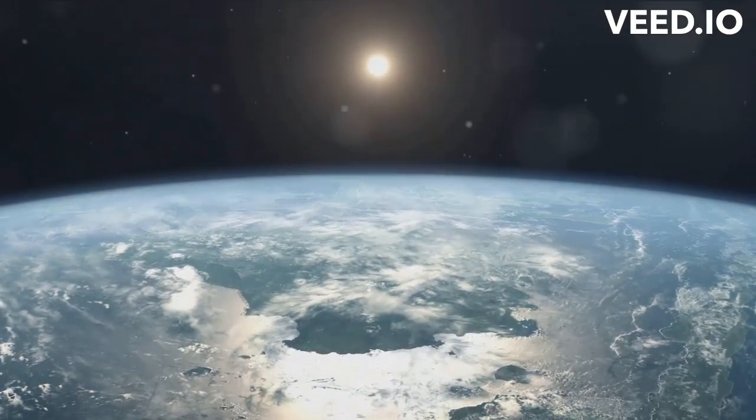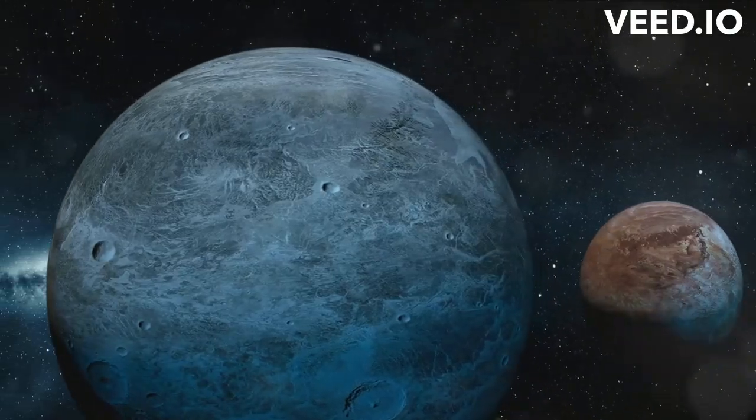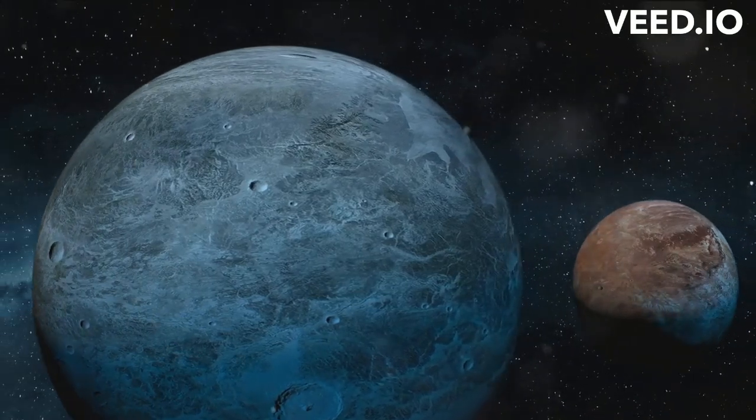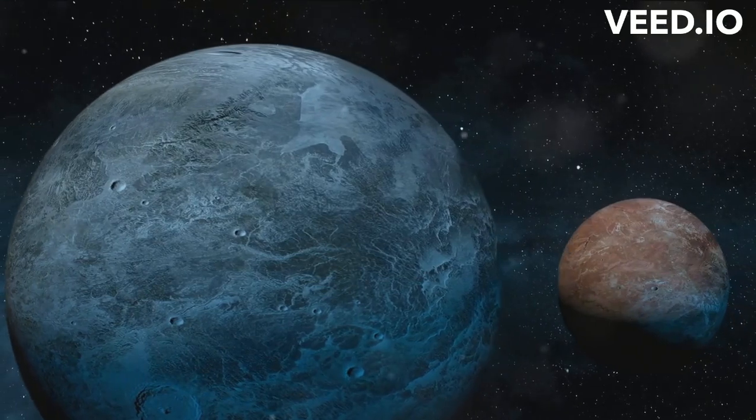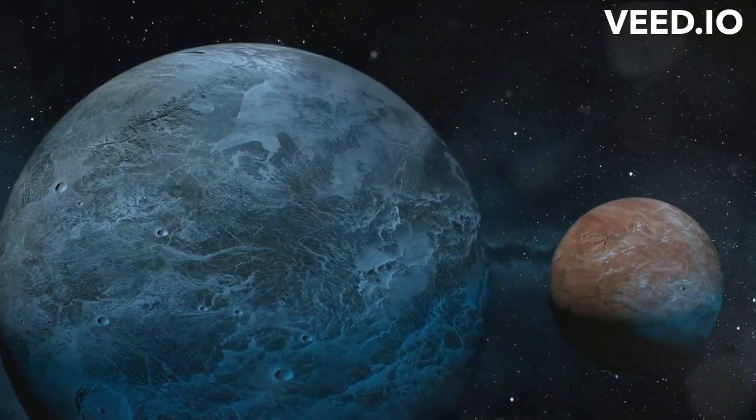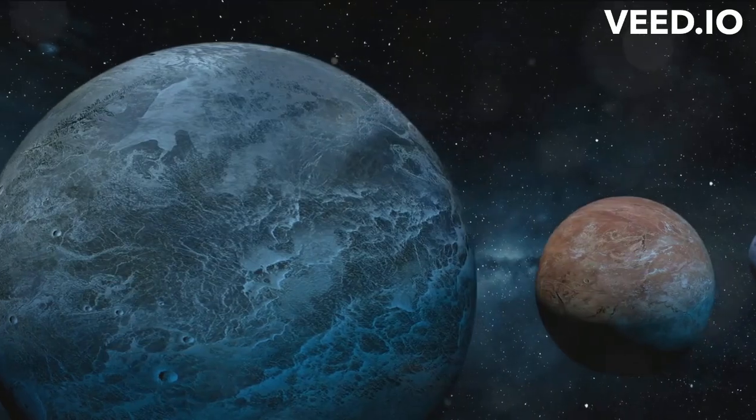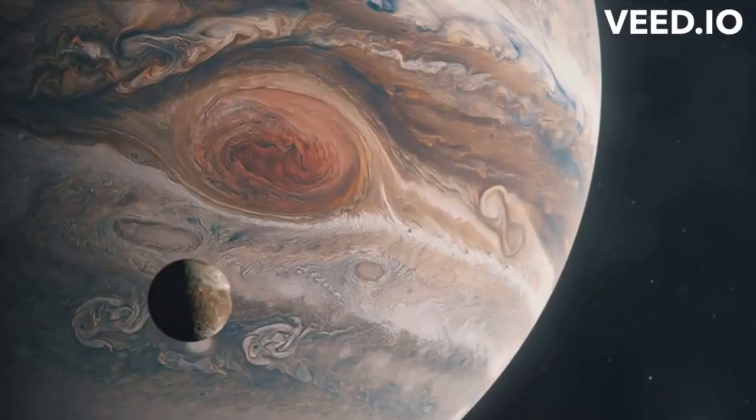Each planet in our solar system, from the smallest dwarf planet to the gas giants, maintains this delicate balance in their own unique way. They move at different speeds and at varying distances from the Sun, but all share the common goal of staying in their orbit.